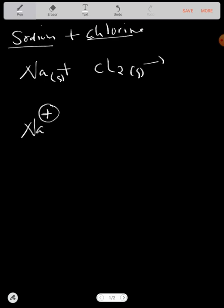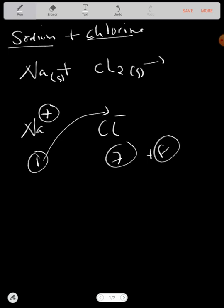Chlorine is found in Group 7 and it's a non-metal, so it has to gain one electron. Chlorine has got seven electrons in the outer shell. Sodium has got one electron in the outer shell.